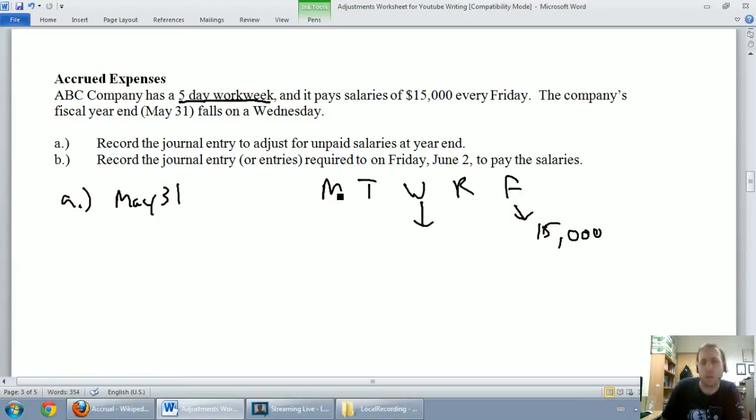In the absence of other information, we're going to assume that we pay at a pretty steady rate. How much is one day's work worth? Well, if it's $15,000 every Friday and we're paying them for five days' work, it's $15,000 over five. It means they're earning $3,000 per day.